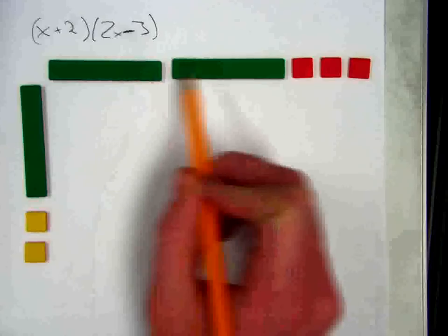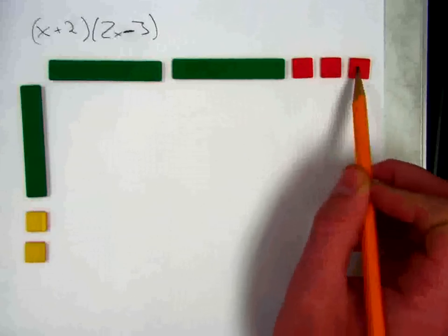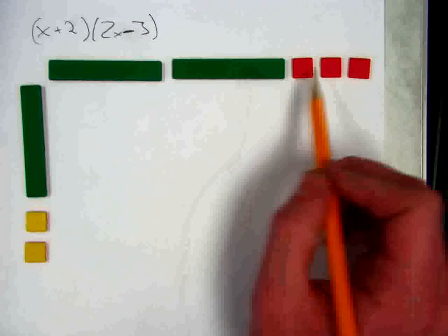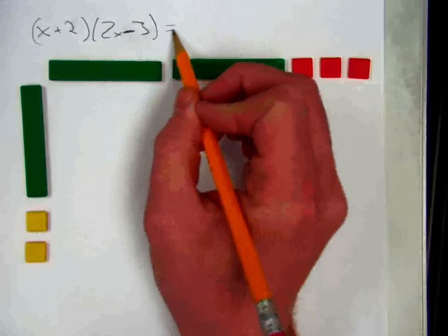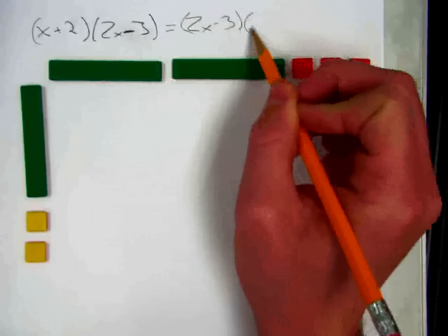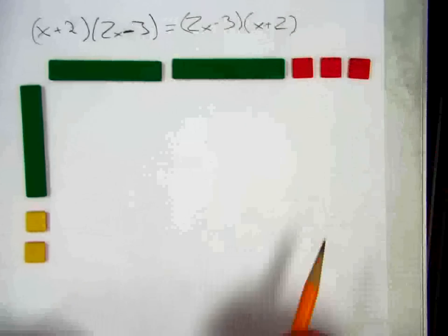And then on the top I have 2x and then for a minus 3, in other words a negative 3, I show the red tiles to show that they're negatives. It doesn't matter which factor goes on top and which one goes on the side because of the commutative property. I could multiply these in the other order and I would get the same thing.